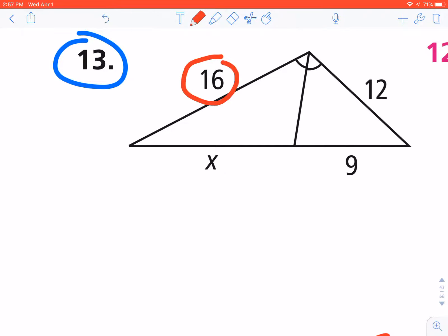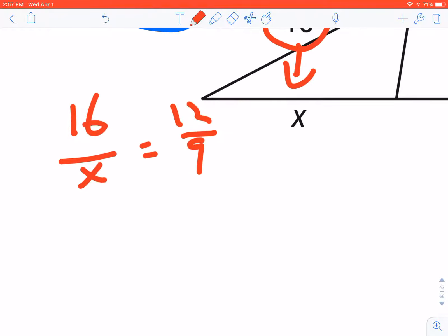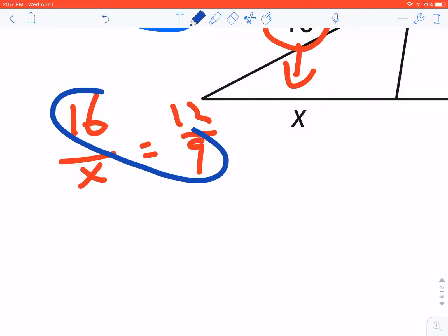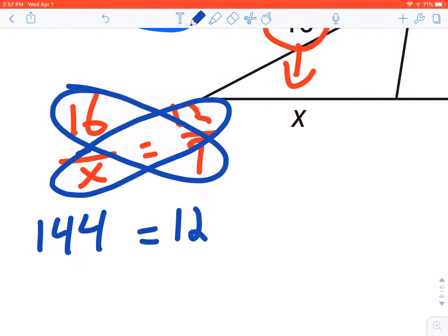In this case, if you want to work from top to bottom, I'm going to compare 16 is to x as 12 is to 9. That allows me to simply cross multiply and divide. When I multiply my 9 times 16, I get 144, and then I get 12x on the other side.